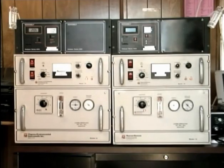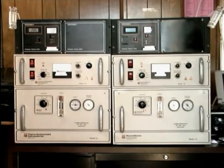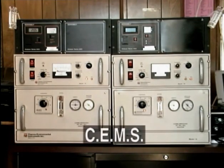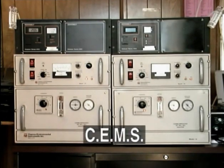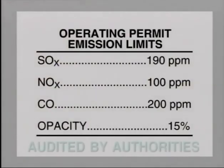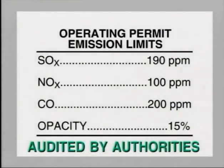Compliance with environmental regulation is essential in order for the plant to retain its operating license. The operating procedures, equipment design, and maintenance are all developed with these regulations in mind. Monitoring of critical discharges from the plant is performed on a continuous basis through the continuous emission monitoring system, known as CEMS. Regular reports must be submitted to the environmental authorities, and spot checks and audits are often carried out without prior notice.